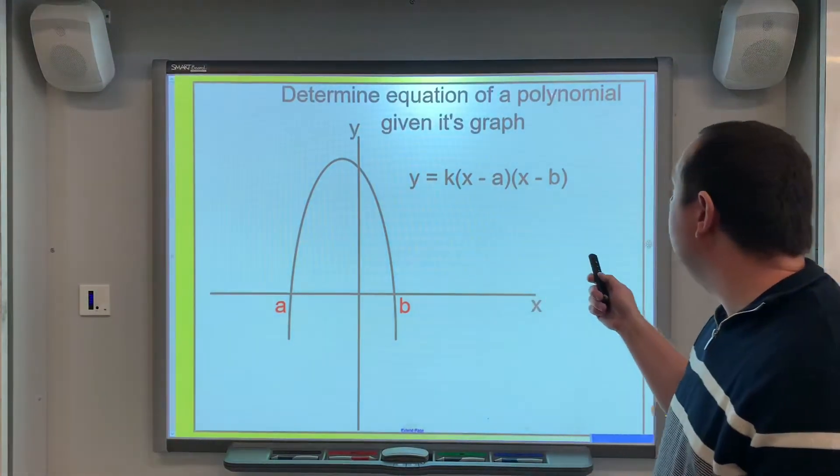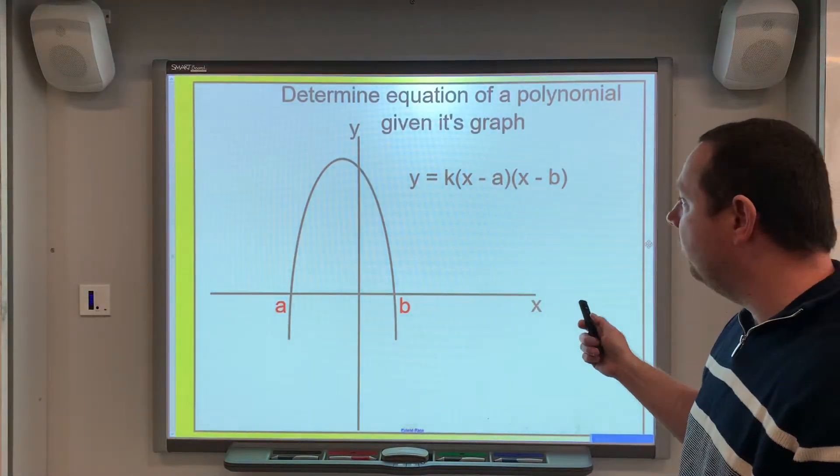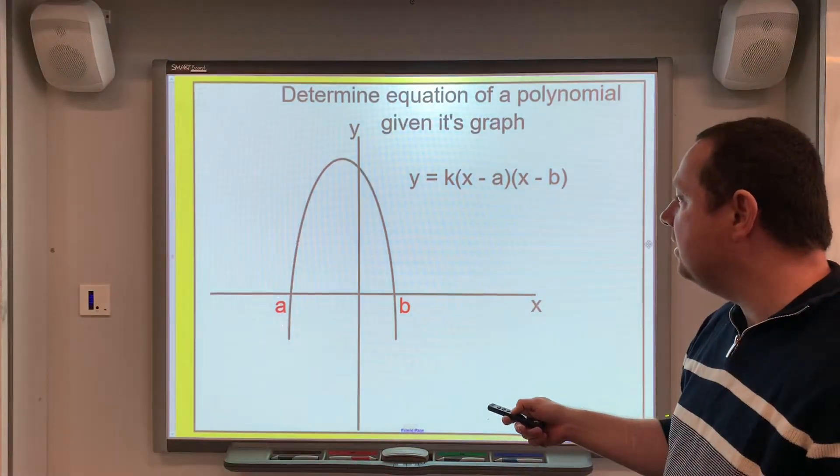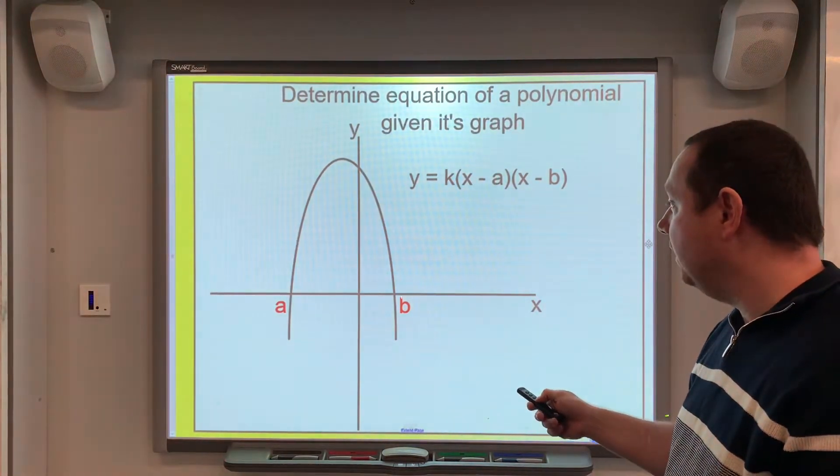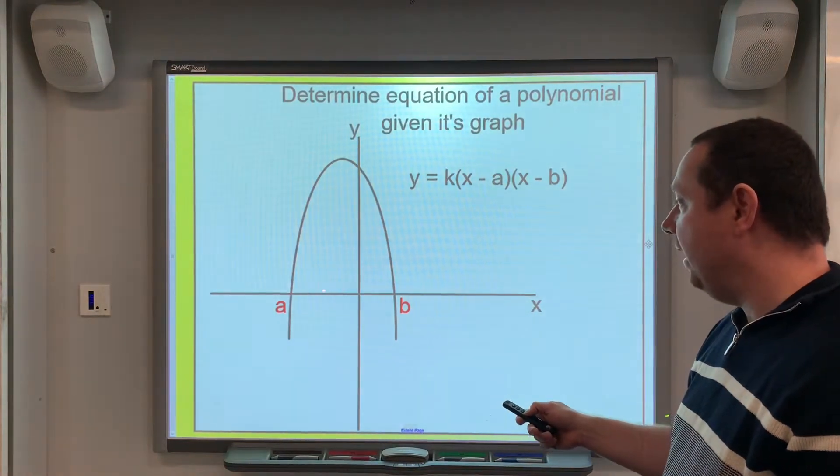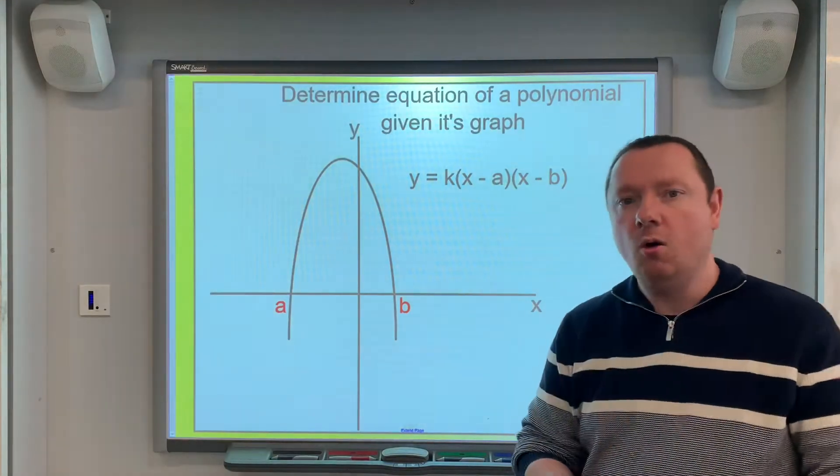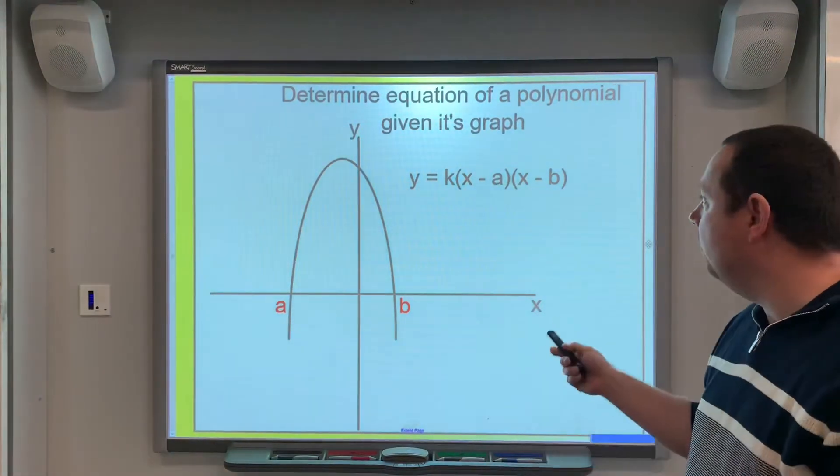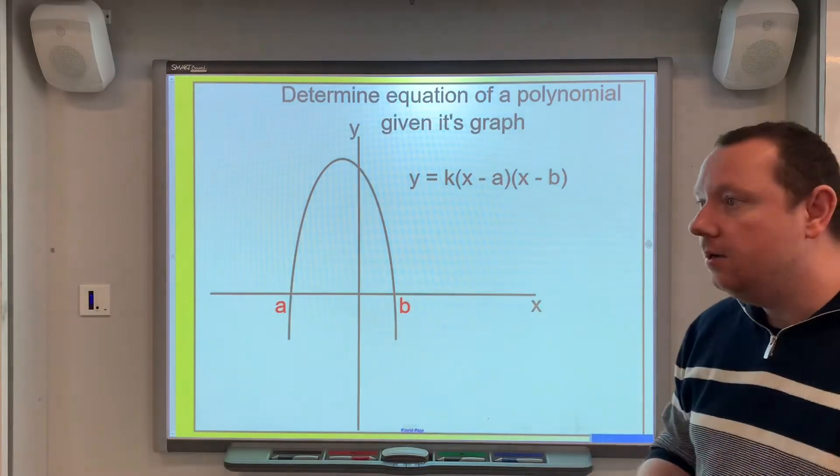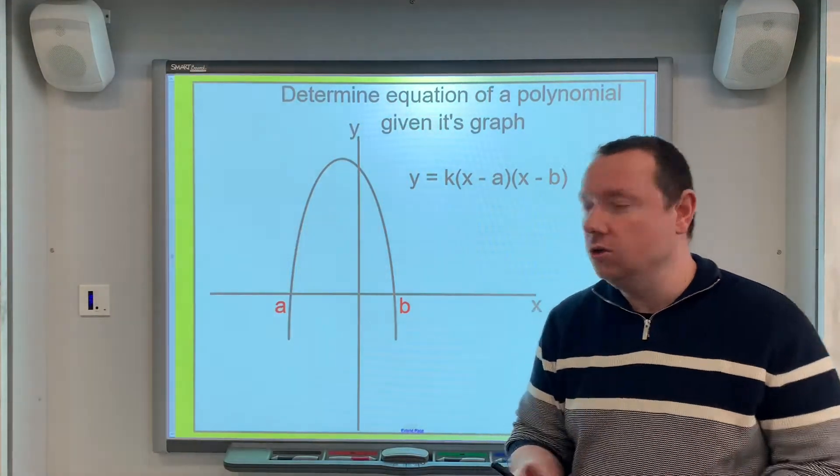Let's look at determining the equation of a polynomial given its graph. Here's a basic example. It is a quadratic, because it's a parabola. And you'll notice I've noted the roots a and b. Well, if we know the roots of a parabola, we immediately know that it must be x minus a times x minus b.